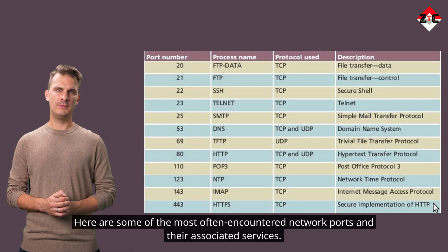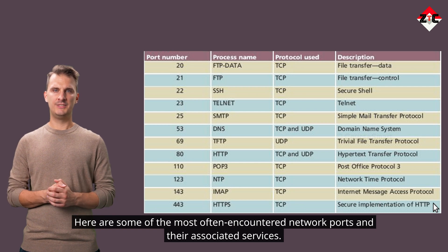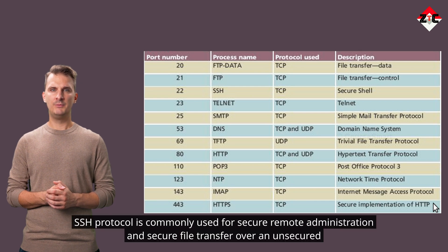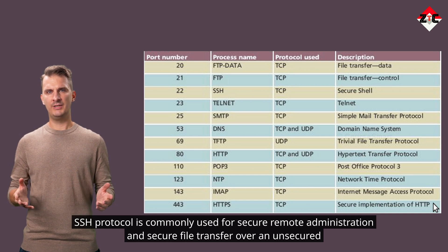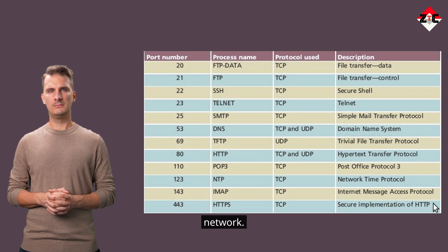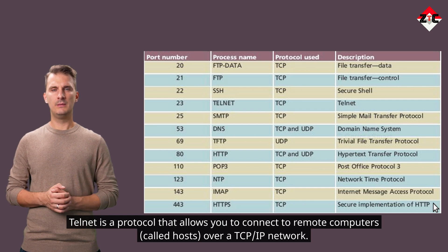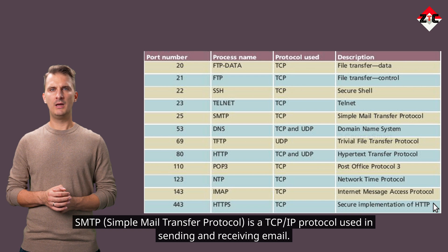Here are some of the most commonly encountered network ports and their associated services. FTP protocol is used for file transfer. SSH protocol is commonly used for secure remote administration and secure file transfer over an unsecured network. Telnet is a protocol that allows you to connect to remote computers called hosts over a TCP/IP network. SMTP — Simple Mail Transfer Protocol — is a TCP/IP protocol used in sending and receiving email.